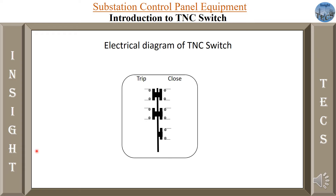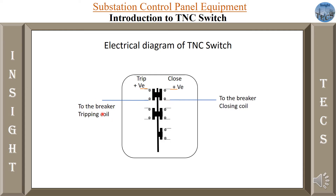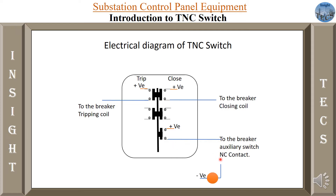Now let us move on towards the electrical diagram of the TNC switch. For the closed contacts, we provide a positive supply from the panel, and the other end is connected to the closing coil inside the circuit breaker. Similarly, for trip, positive supply is given to that contact from the panel, and the other end goes to the breaker tripping coil. Some wiring is also required for auto-reclose: we give positive supply at one end, and the other contact is connected to the auxiliary switch, which has one NC contact.